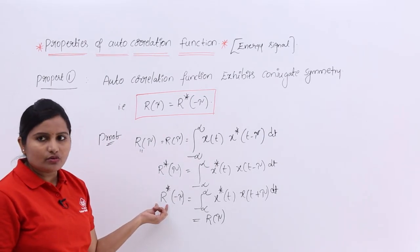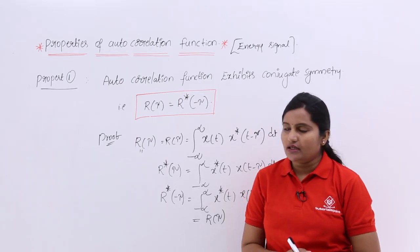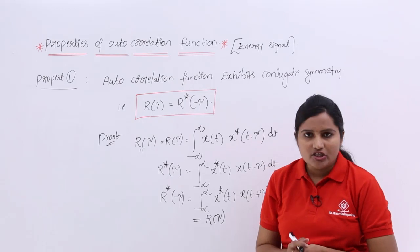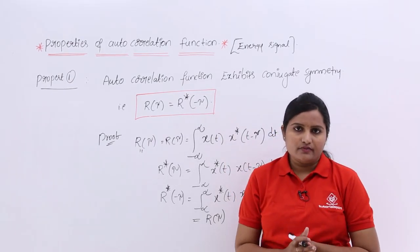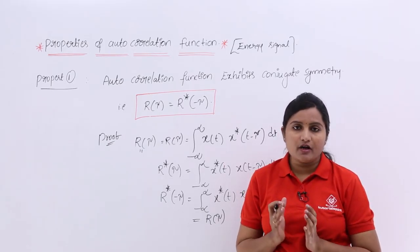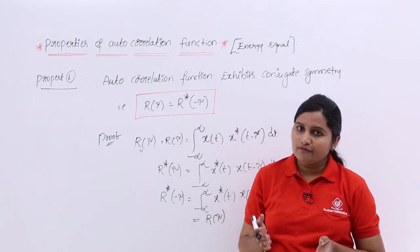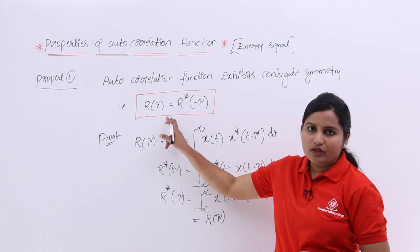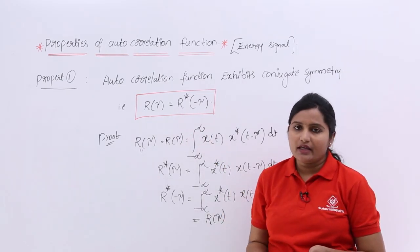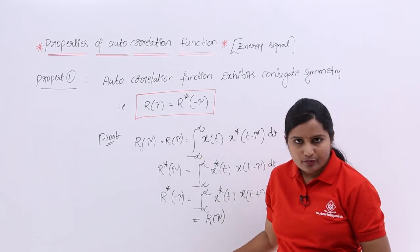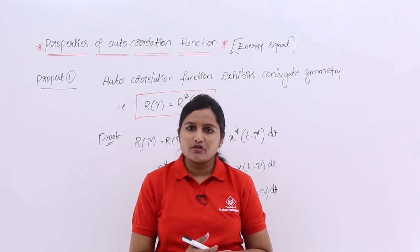Therefore r(τ) is equivalent to r*(−τ), and we can say this property is proved. This is the first property of autocorrelation function of energy signals: the autocorrelation function exhibits conjugate symmetry. Whenever you see r(τ) you can write r*(−τ). This is also asked directly in exams about the conjugate symmetry property of autocorrelation function. The same property applies to power signals with the same proof. From the next class we will discuss the remaining properties.